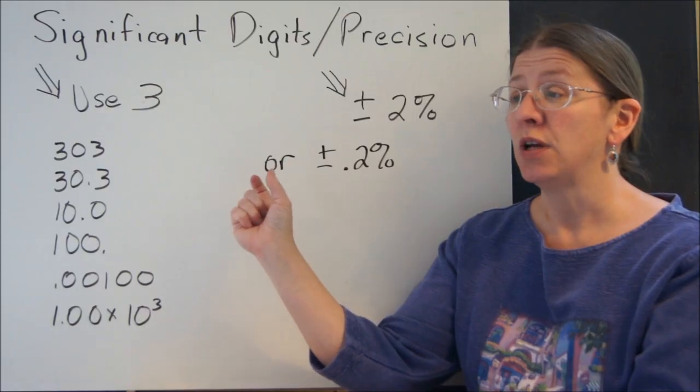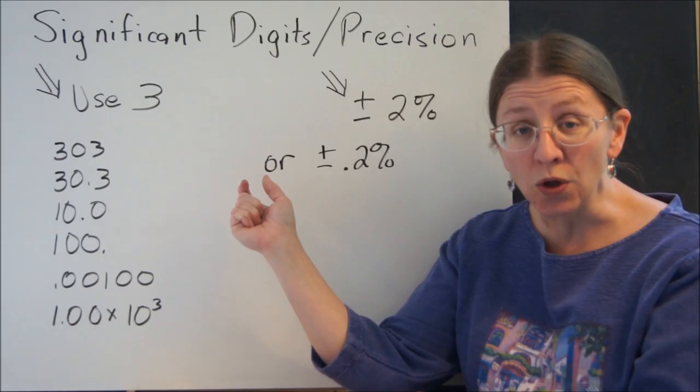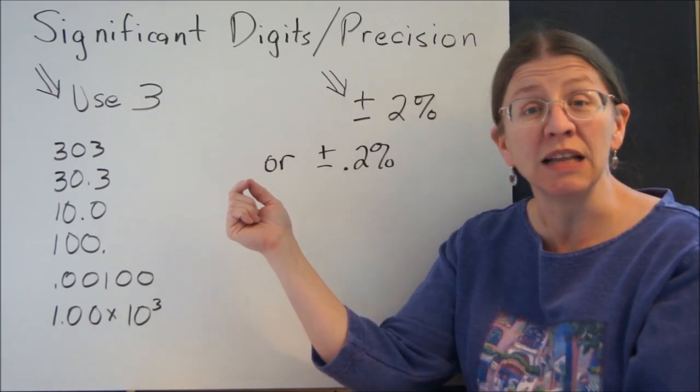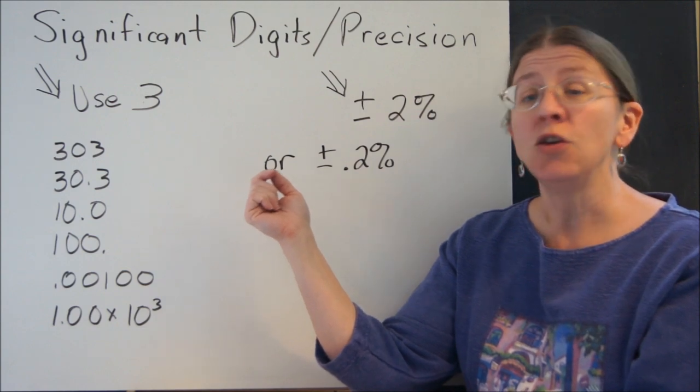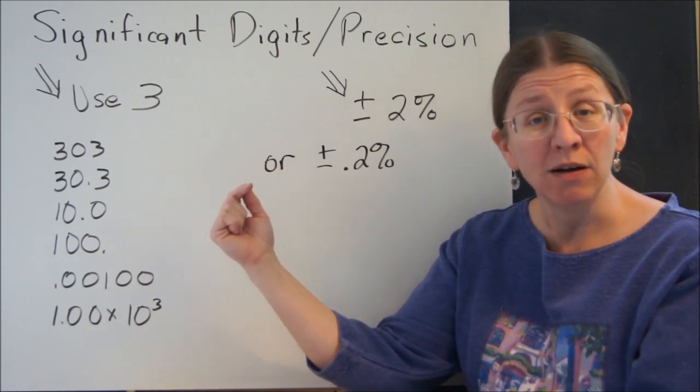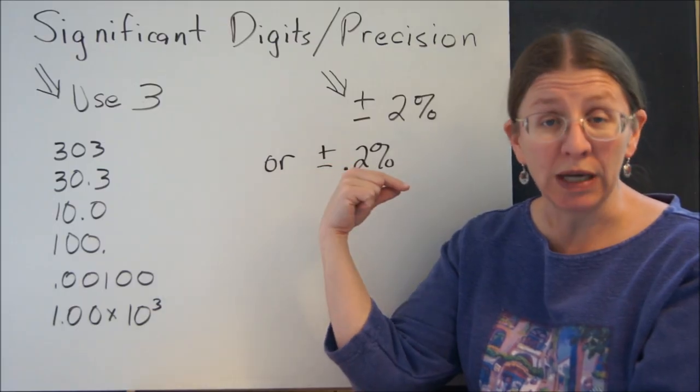So if somebody measured how long something was with a ruler, you're probably only going to get it to plus or minus an eighth of an inch, maybe a sixteenth of an inch. That's your accuracy. Anything you do with that number past there is not going to be any more accurate than the inputs you put in.